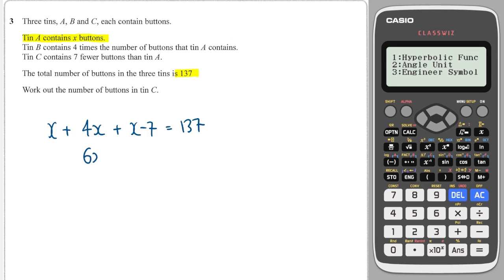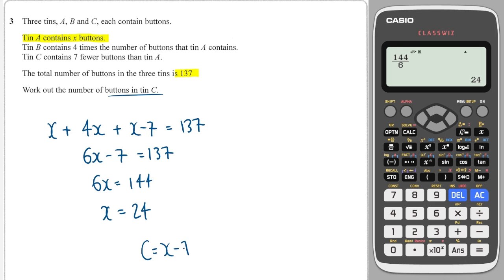Collecting up the x's, I have 6x. I've got minus 7, and that's equal to 137. Adding 7 to both sides gives me 144. And then dividing through by 6 gives me 24. But that's not quite right, because it does ask for the number of buttons in tin c. And we know that c is equal to x minus 7. So therefore, that's 24 minus 7, which is 17.